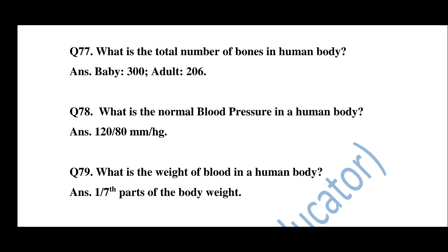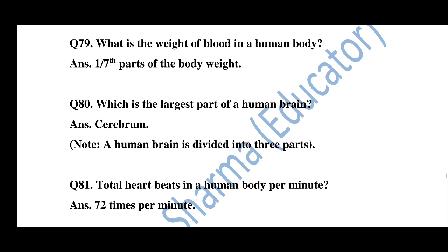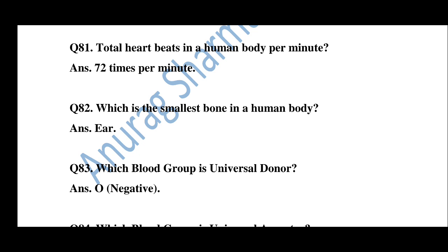Question number 78: Normal blood pressure in a human body — 120/80 mmHg. Question number 79: Weight of blood in a human body. Question number 80: The largest part of the human brain — the cerebrum. Note: the human brain is divided into three parts. Question number 81: Total heartbeats per minute — 72. Question number 82: The smallest bone in the human body — the ear.